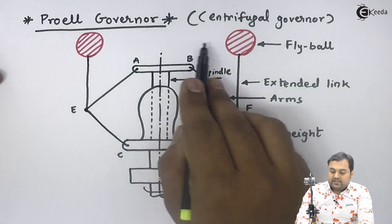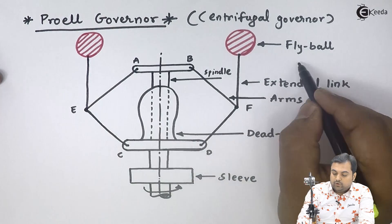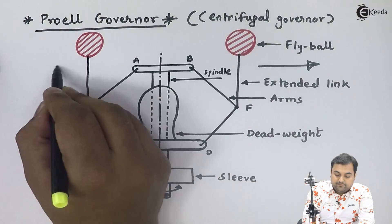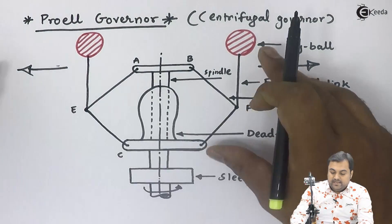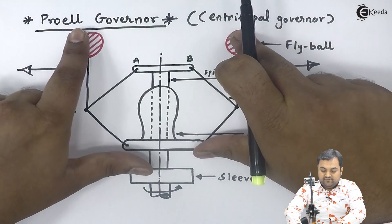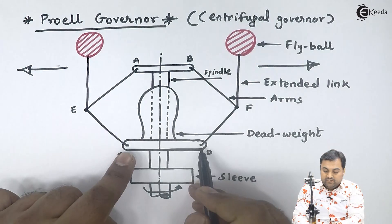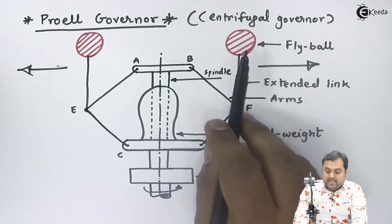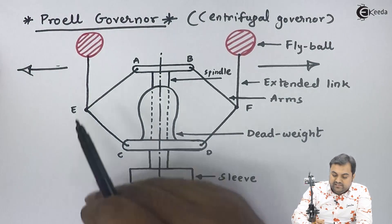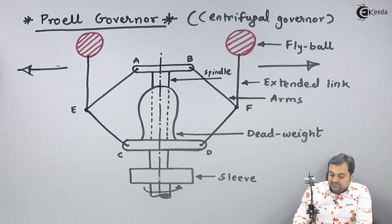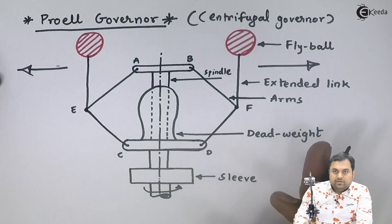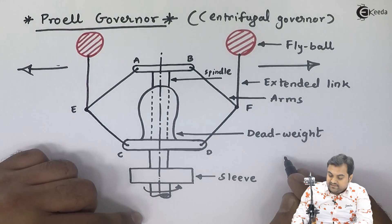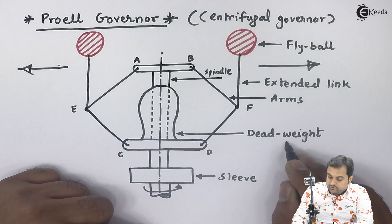The fly balls move outwards about this fixed link. When they are moving outward, the sleeve gets lifted and the throttle valve closes the passage as I have explained in the diagram before.